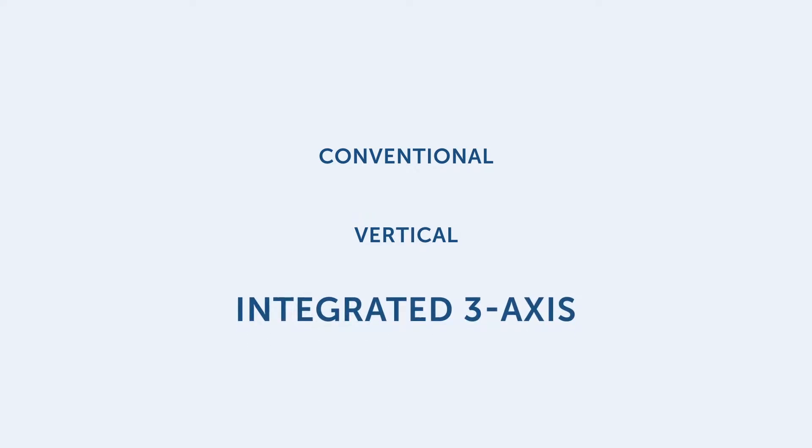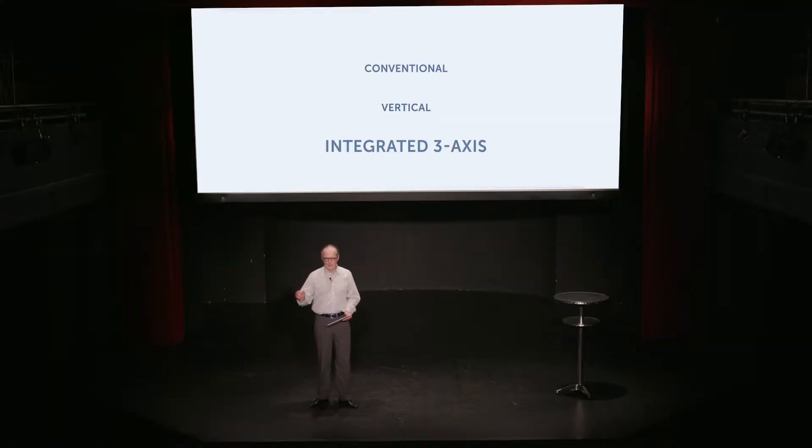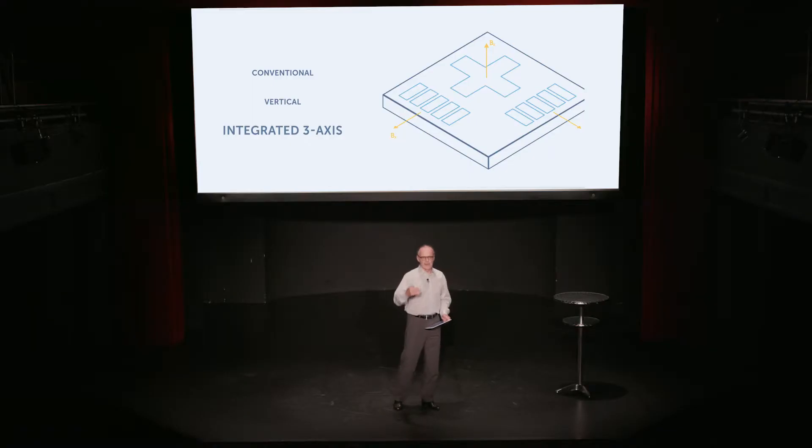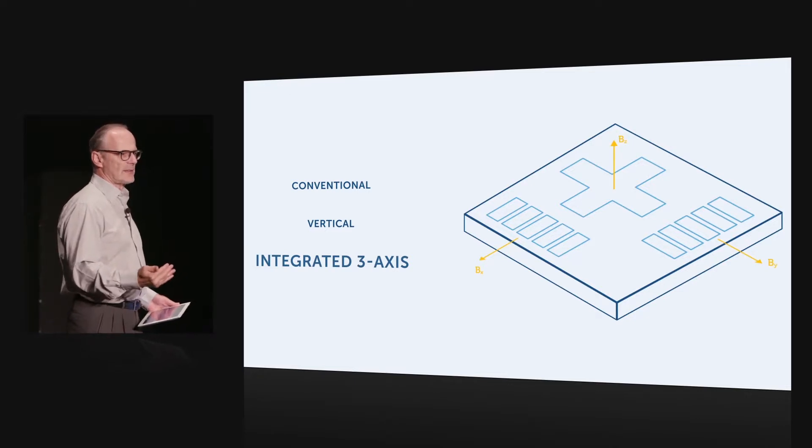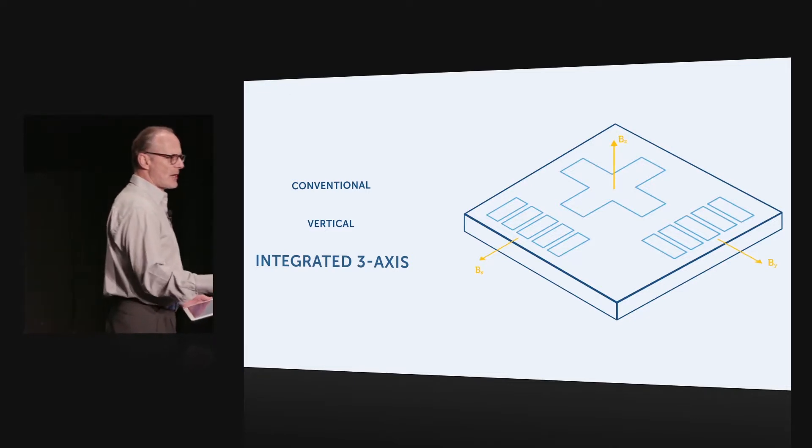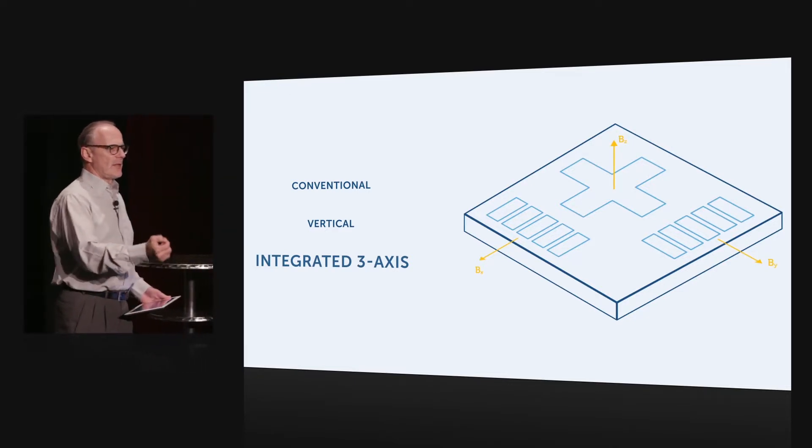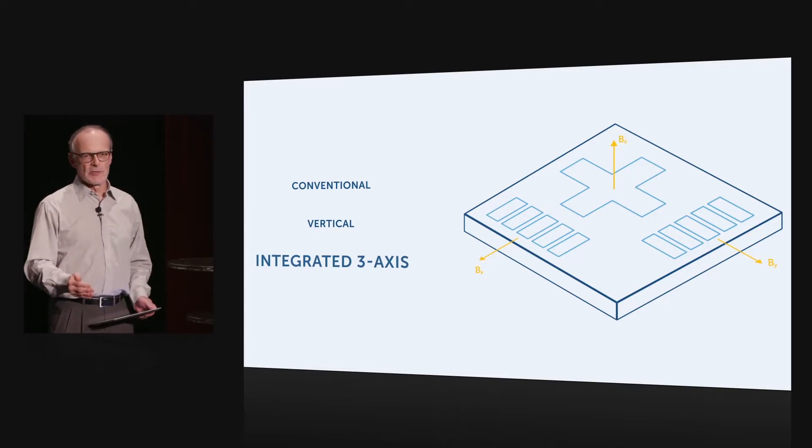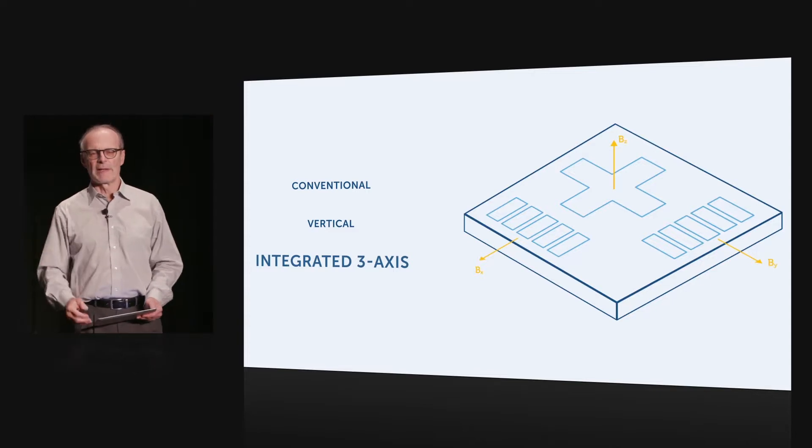By combining a single planar Hall element with two vertical Hall elements, we can today create a sensor, a so-called integrated three-axis sensor, that is sensitive to all three axes, that will give you the measure at one single point, both the X, Y, and Z directions, components of the magnetic field.